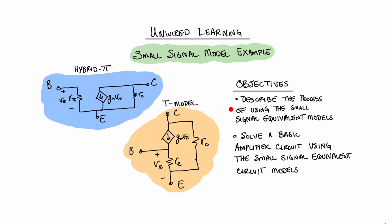We'll be discussing a few of the rules associated with transitioning the circuit into the small signal model equivalent. And after that, we're going to look at our basic amplifier circuit and we're going to try to solve it.